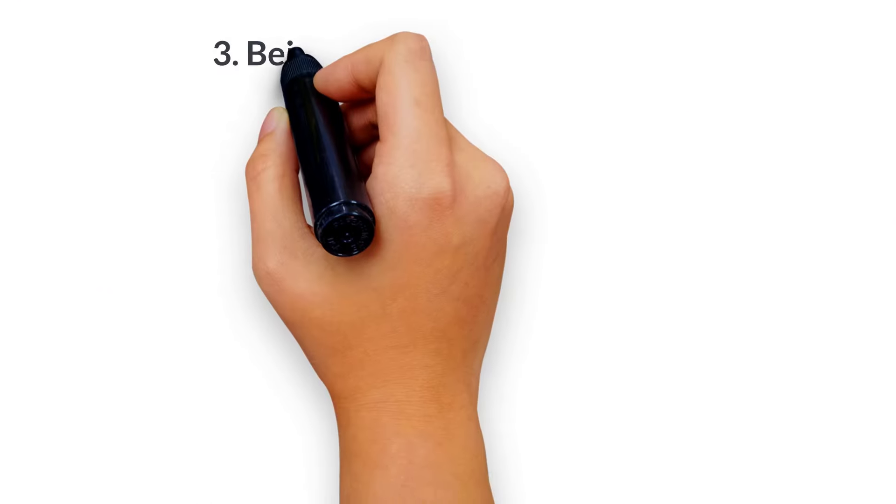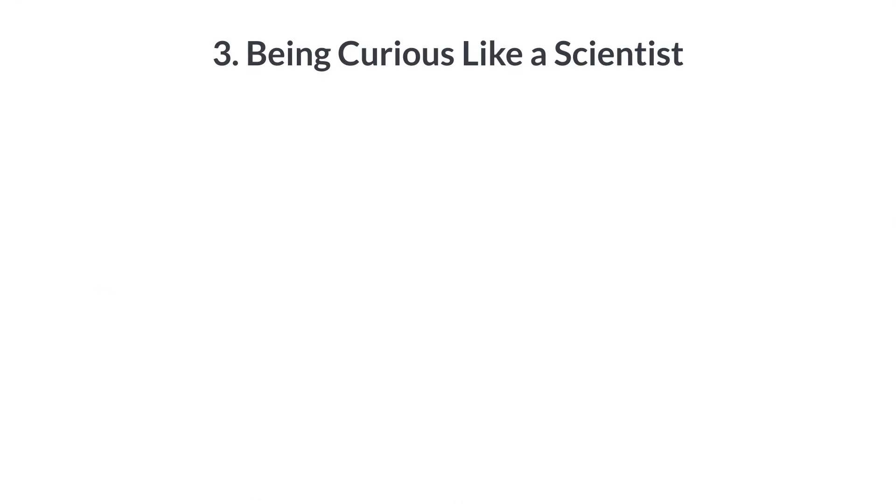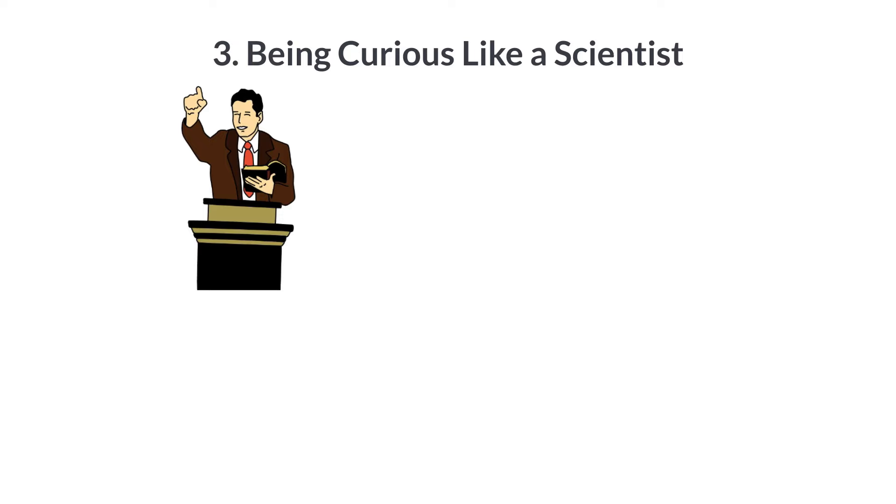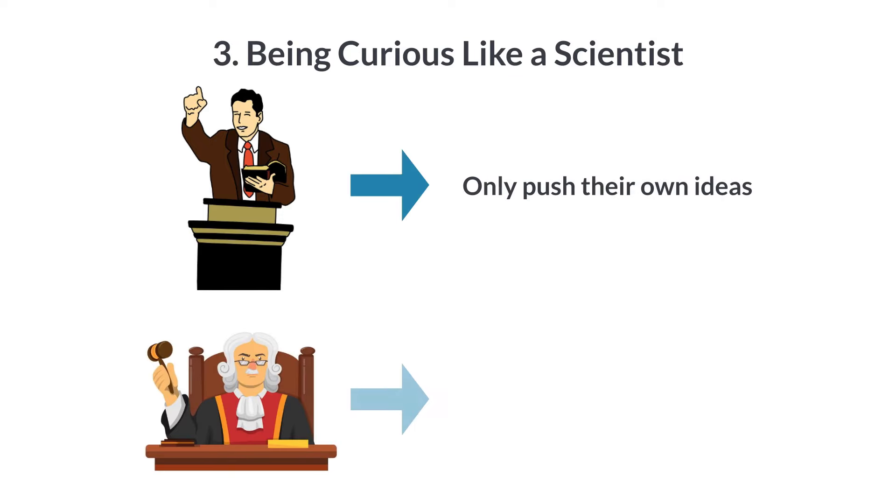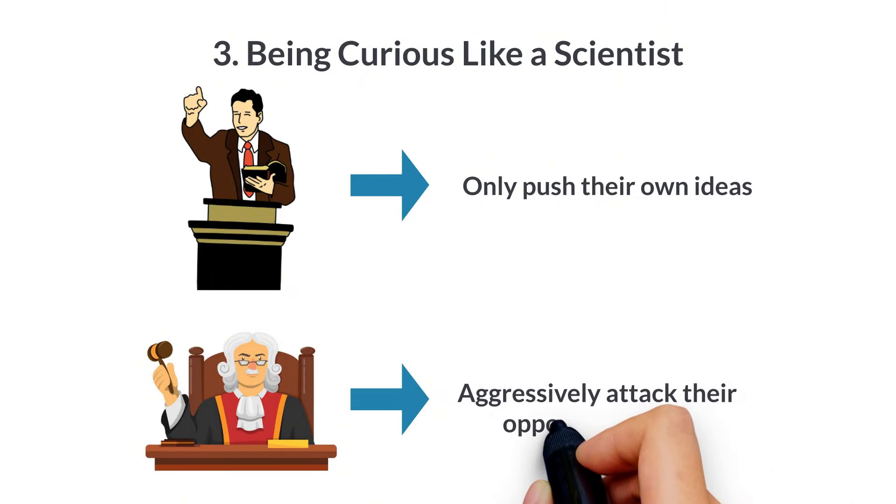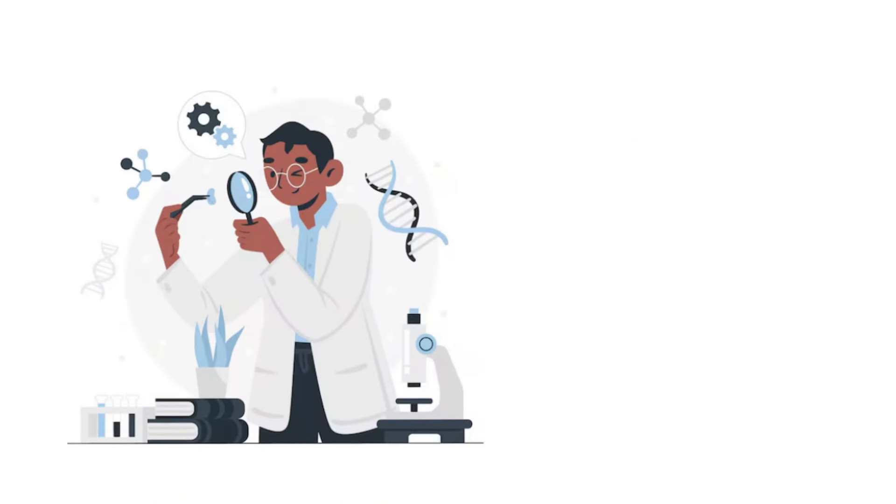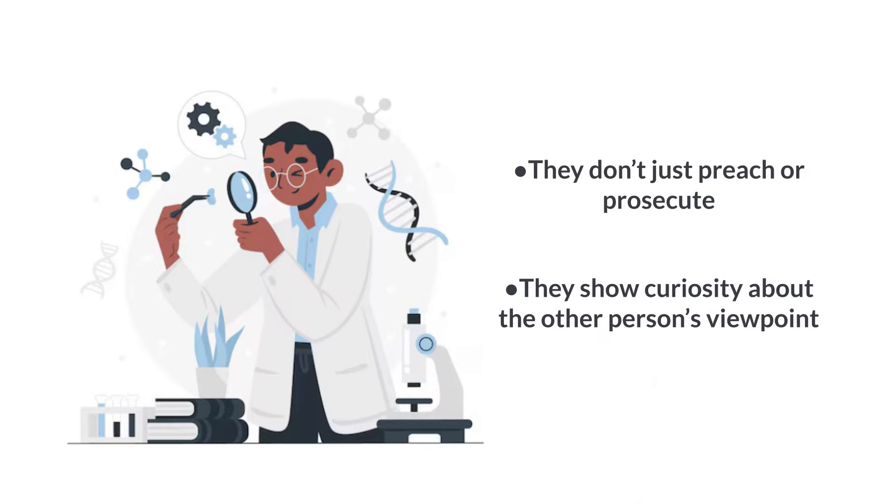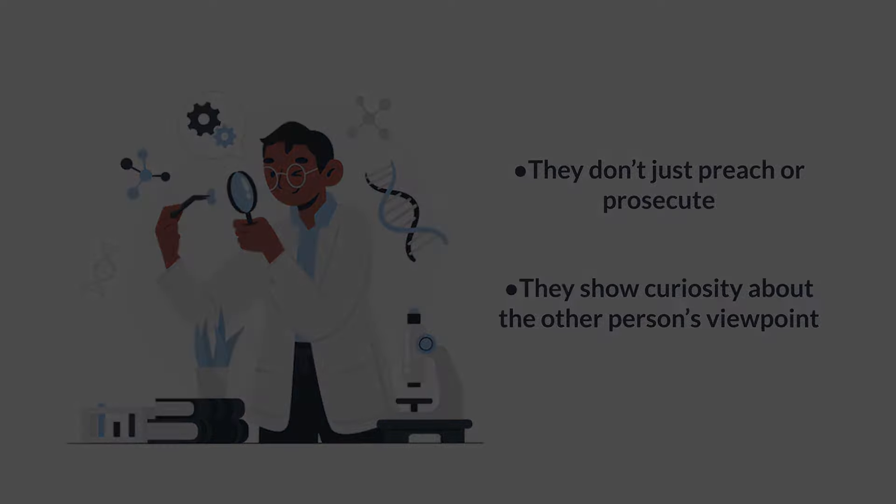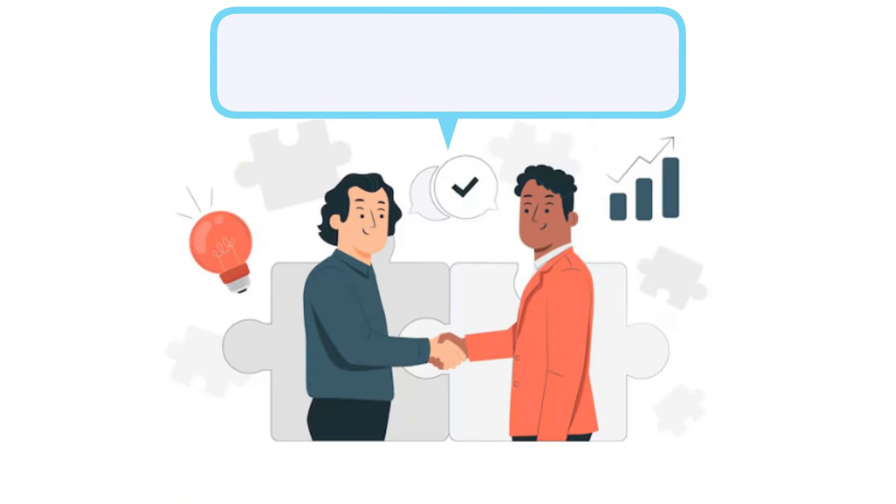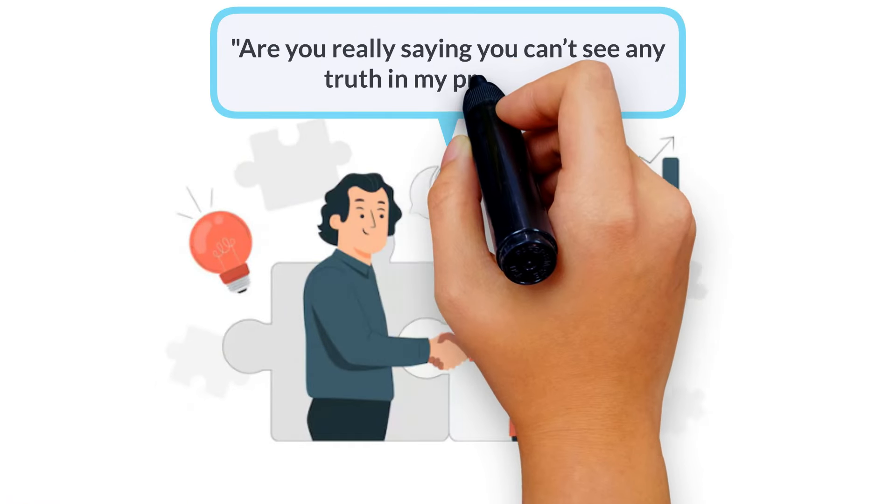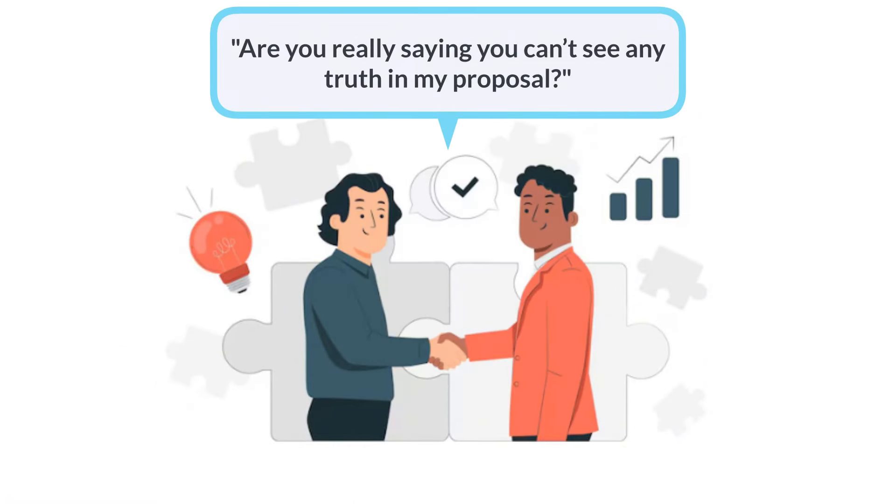Three, being curious like a scientist. While average negotiators act like preachers who only push their own ideas or prosecutors who aggressively attack their opponent's ideas, the best negotiators are more like scientists. They don't just preach or prosecute. Instead, they show curiosity about the other person's viewpoint. They ask questions like, are you really saying you can't see any truth in my proposal? This approach opens up a dialogue rather than just a confrontation.